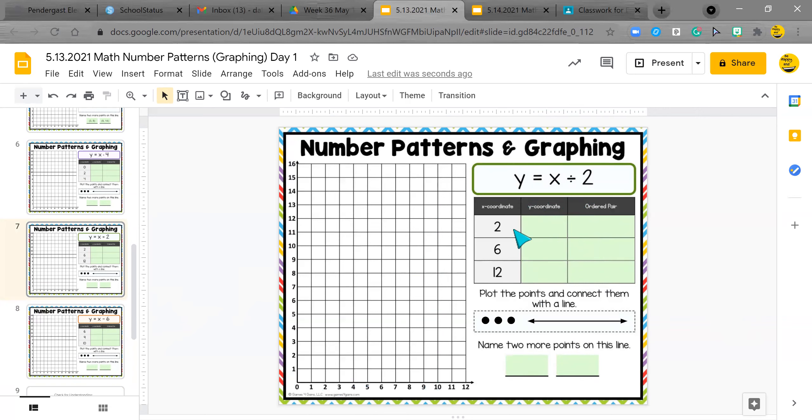So the first thing I do is I take this two and I put it in my x. Two divided by two is one. So my coordinate is two, one, my ordered pair. So now I'm going to do six divided by two. Yes, you guys are good at this. I love your multiplication and division facts. So it's six, three. Now I'm going to put in 12. 12 divided by two. Yes, it is six. So my ordered pair is 12, six.